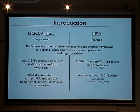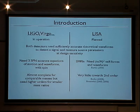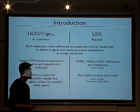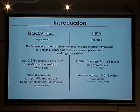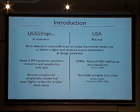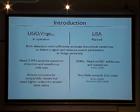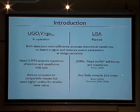Both detectors need sufficiently accurate theoretical waveforms to detect any signal and measure the source parameters, such as the mass and the spin. For comparable mass binaries, you need to expand out to three-and-a-half post-Newtonian order to get accurate enough equations of motion for sufficient precision on these parameters. Whereas for extreme mass ratios, you need to calculate to second order in the mass ratio, and the self-forces need to be computed to second order as well.